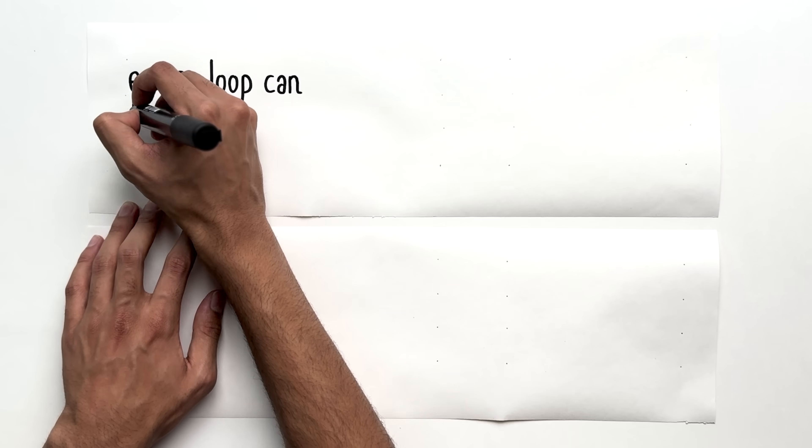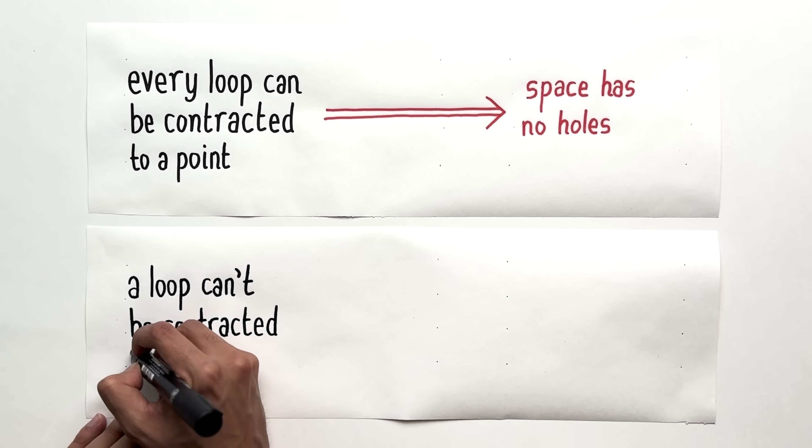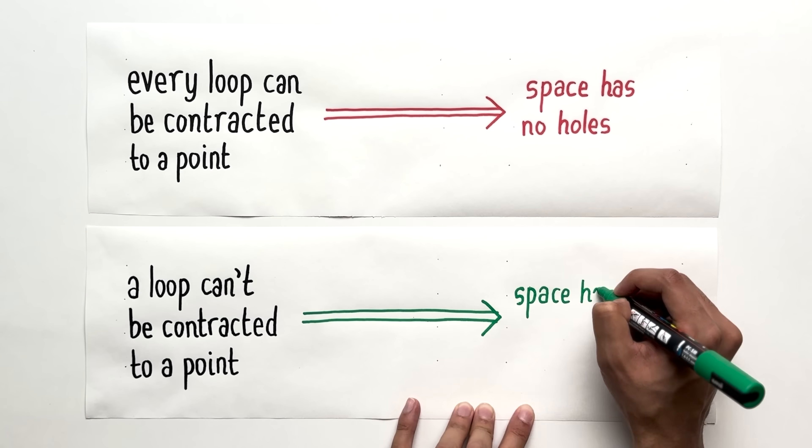So if every loop in your space can be contracted to a point, we'll say that the space has no holes. But if there's a loop that cannot be contracted to a point, we'll say that the space has a hole.